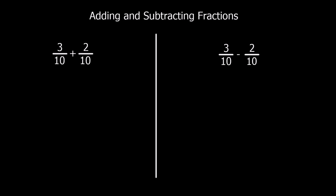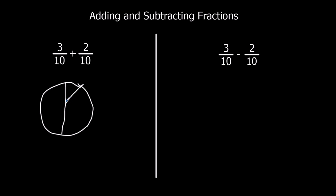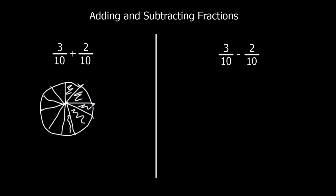Here we're being asked to add and subtract fractions. In this first example we've got 3 tenths plus 2 tenths. So imagine I had a pizza cut into 10 slices. We've got a pizza cut into 10 slices, so if I've got 3 tenths — 1, 2, 3 — and I add on 2 tenths — 1, 2 — so now you can see I've got 5 tenths.